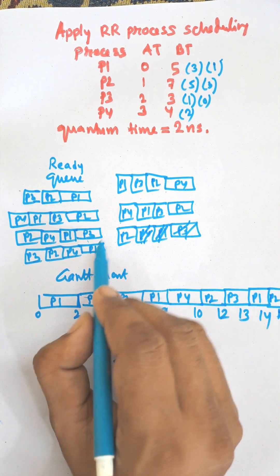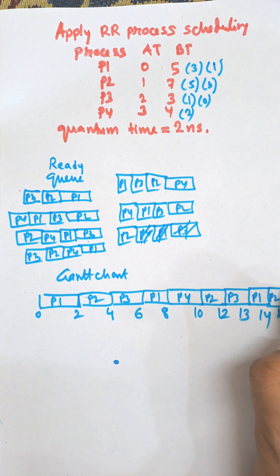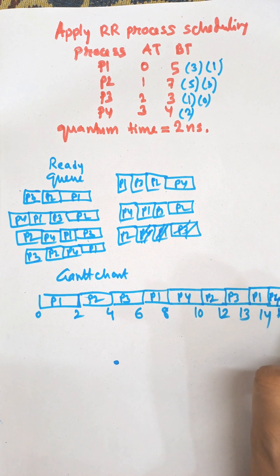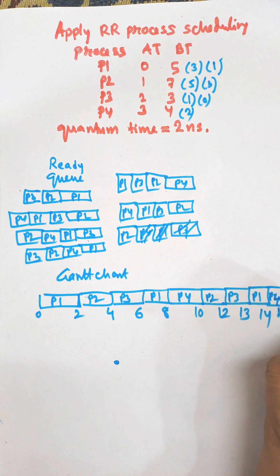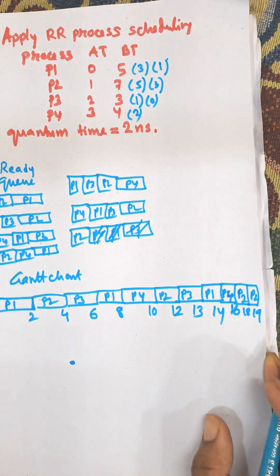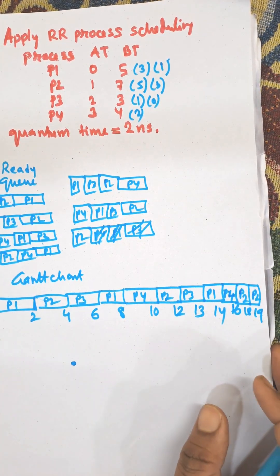The remaining process is P2. P2 will execute and finish at time 18, and finally P2 completes at 19. This is the Gantt chart for the Round Robin scheduling.